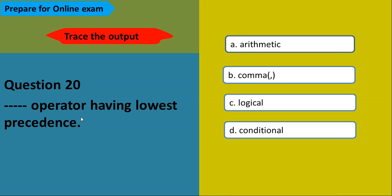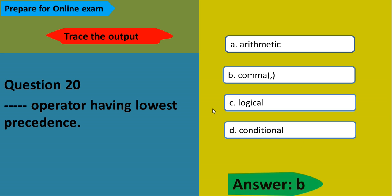Which operator has the lowest precedence? We know the precedence of all operators. The options are arithmetic, comma, logical, and conditional. The answer is comma — the comma operator has the lowest precedence.